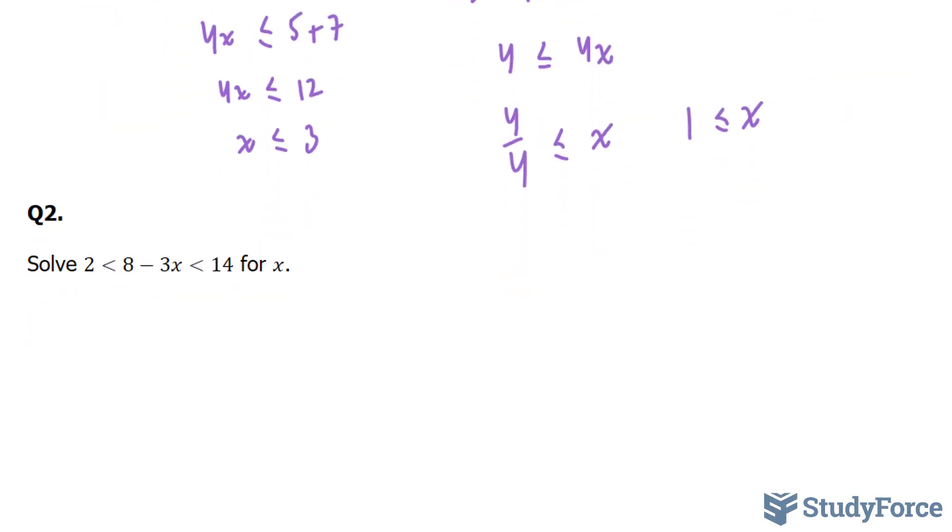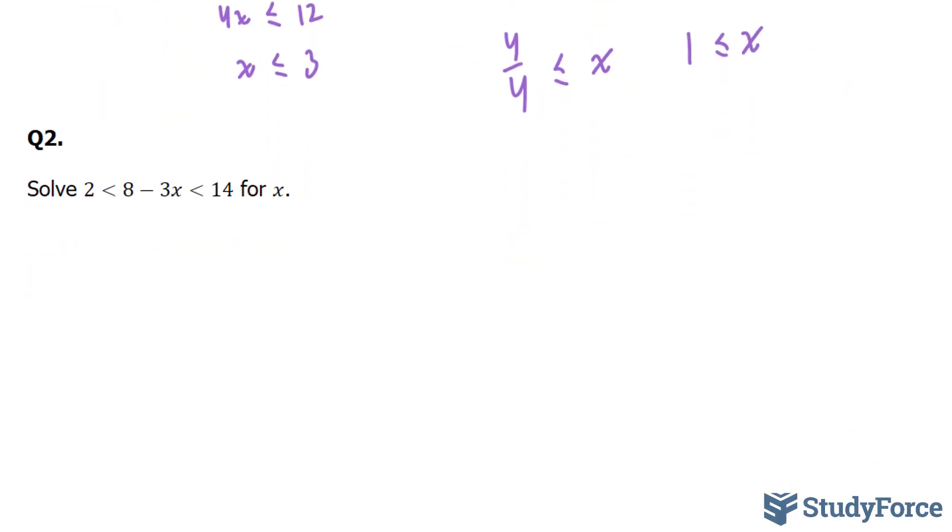Let's move on to question number 2. In question number 2, they ask us to solve 2 < 8 - 3x < 14 for x. Once again, we'll concentrate on this part first, and then on this part second.